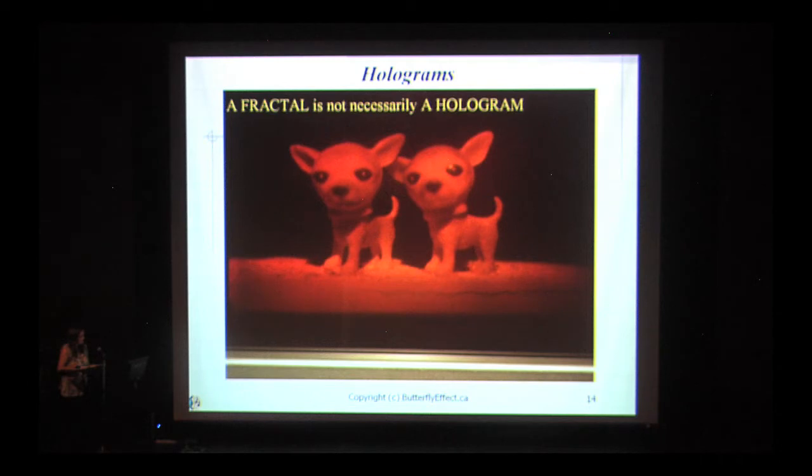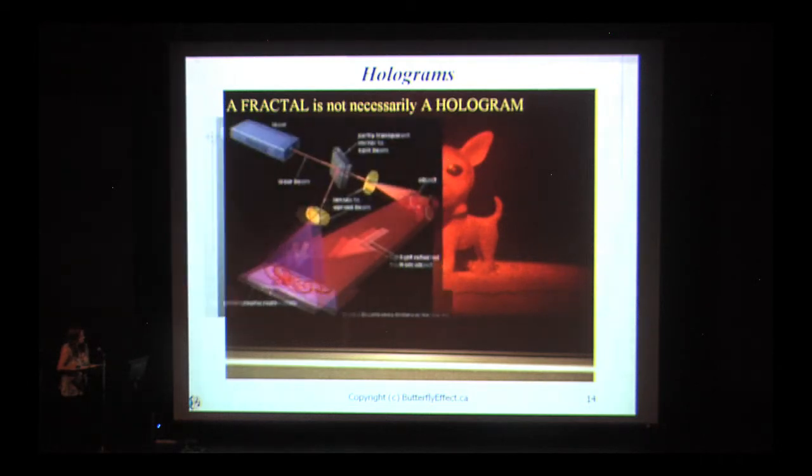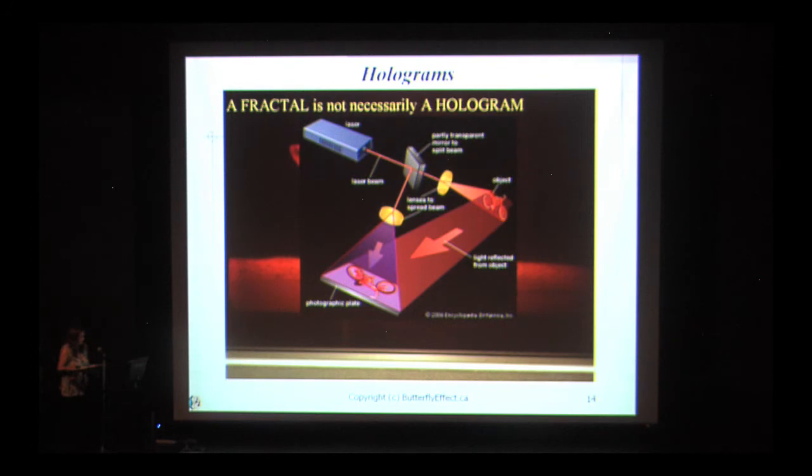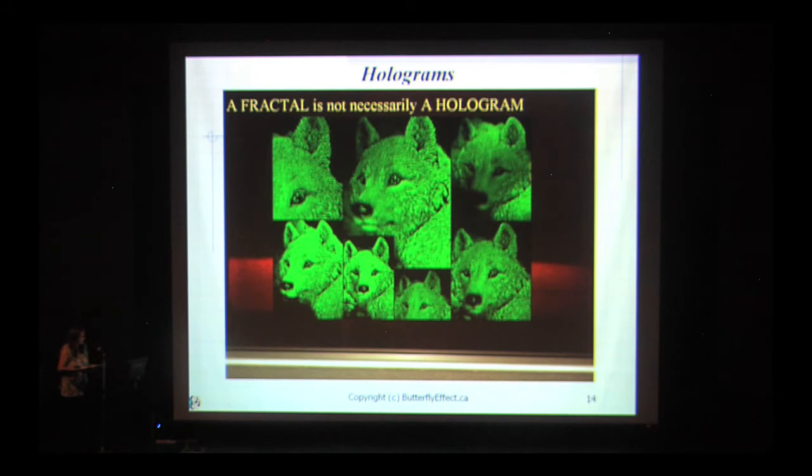When you record a hologram, the original object being recorded is encoded at all scales onto the photograph plate. This is why, when you break a hologram in half, the beam can still reconstruct the whole image, because the whole image is encoded at all scales onto the photographic plate. In other words, the interference pattern recorded onto the photographic plate is a self-similar or self-same fractal pattern.